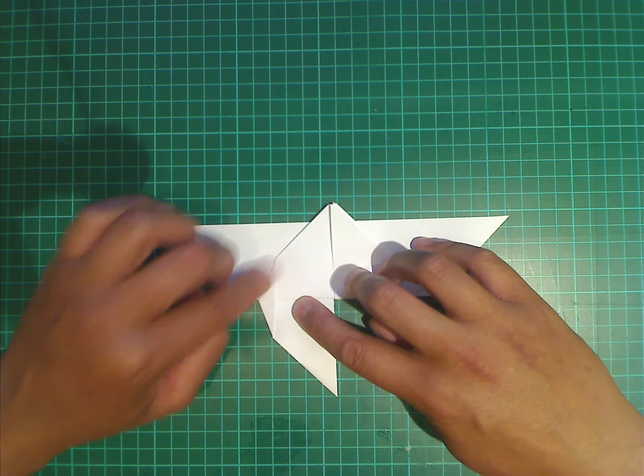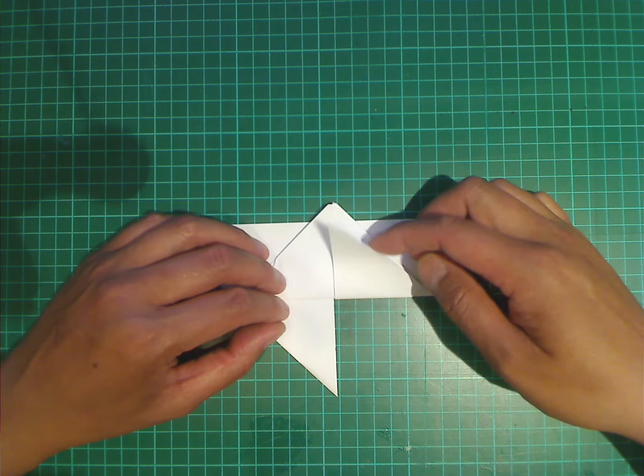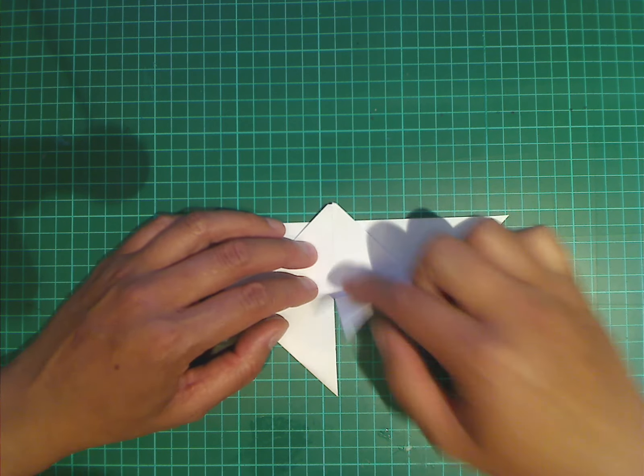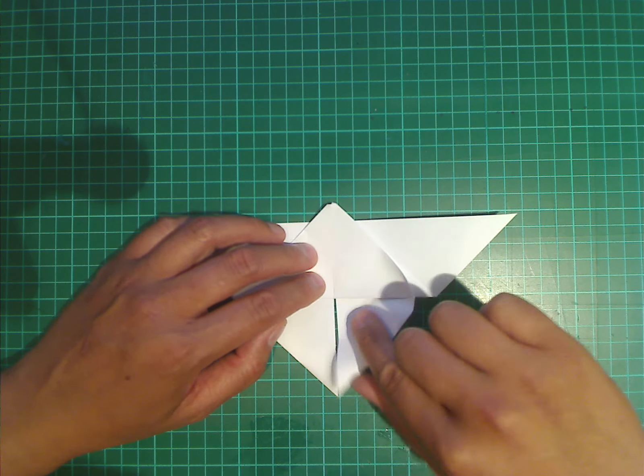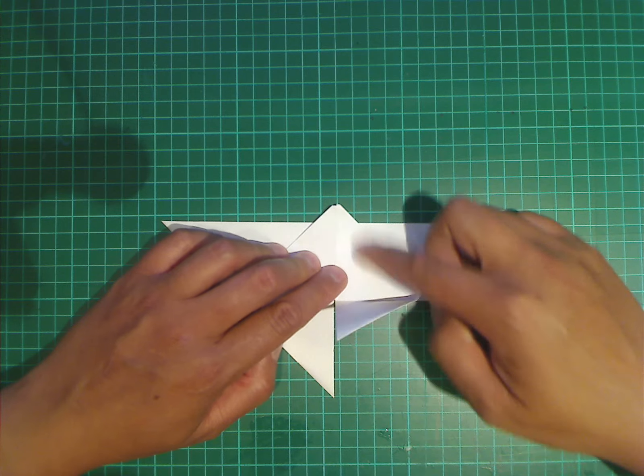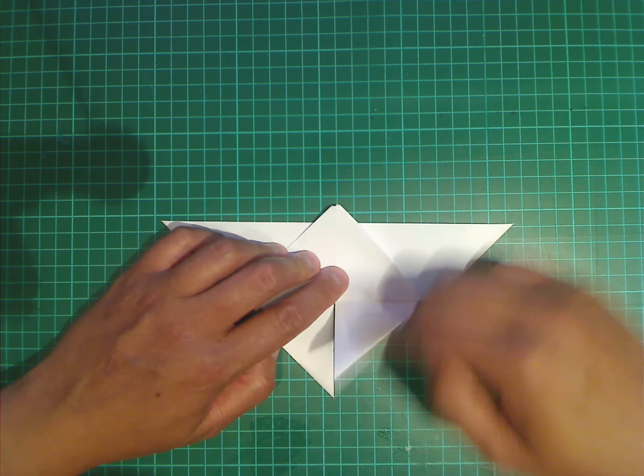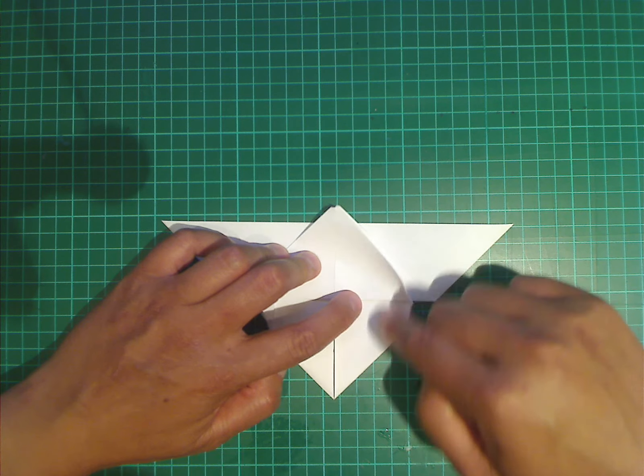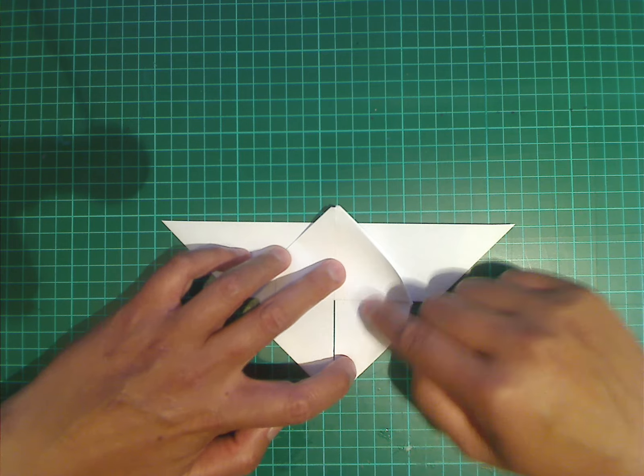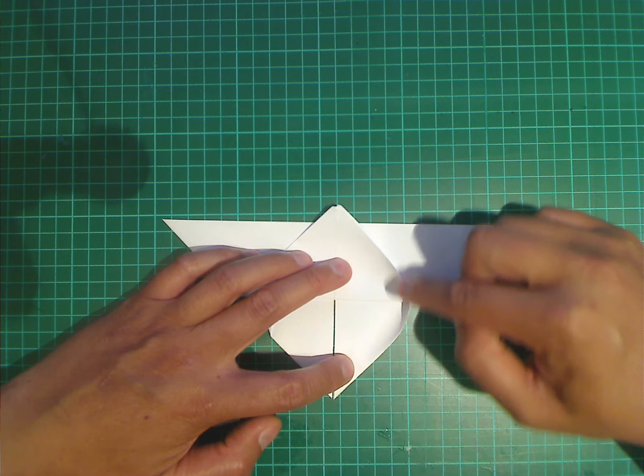So it forms a flat triangle. And we'll do the same on this side. We'll bring this corner down, all the way down. And then we'll gently sweep the paper along here and flatten it.